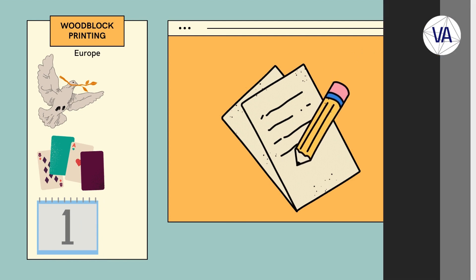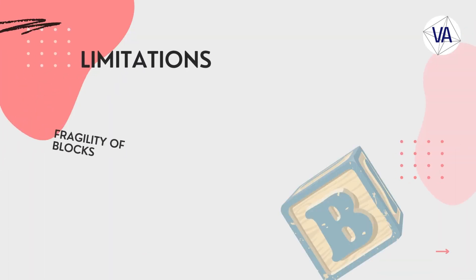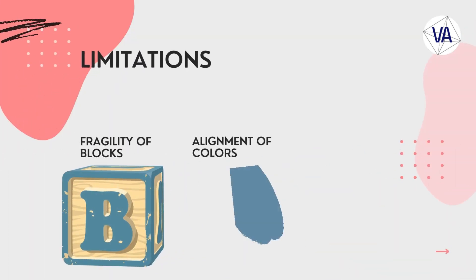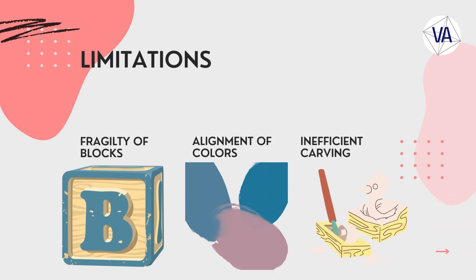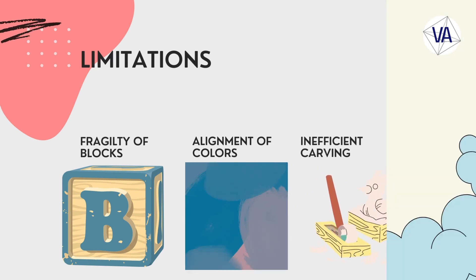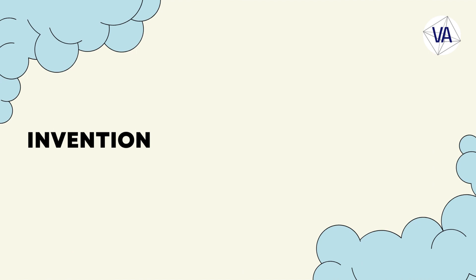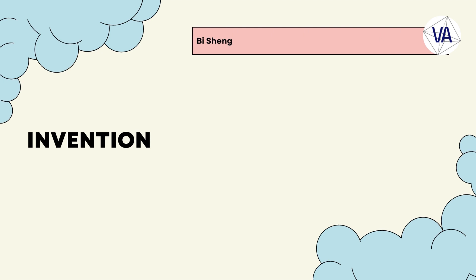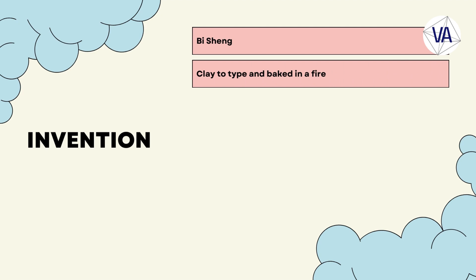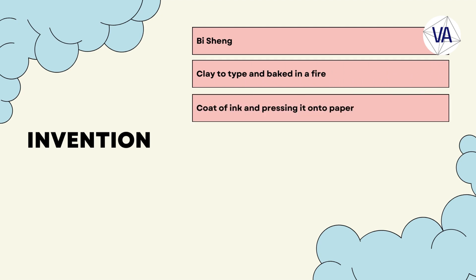However, woodblock printing had some limitations, such as the fragility of the blocks, the difficulty of aligning multiple colors, and the inefficiency of carving a new block for each page. The invention of movable type, which allowed the reuse and rearrangement of individual characters, was a major breakthrough in the history of printing. Movable type was invented by the Chinese artisan Bi Sheng in the 11th century during the Song Dynasty. Bi Sheng used clay to make the type, which he baked in a fire and glued to an iron plate, then coated the type with ink and pressed it onto paper.